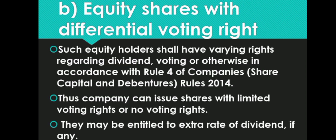Next type is equity shares with differential voting rights. Such equity holders shall have varying rights regarding dividend, voting, and otherwise, in accordance with Rule 4 of Companies Rules 2014 (Share Capital and Debentures). A company may issue shares limited to voting rights or no voting rights, and they may be entitled to an extra rate of dividend if any.